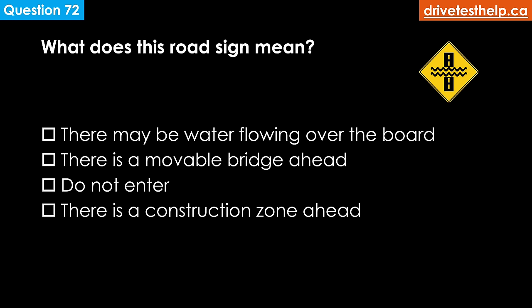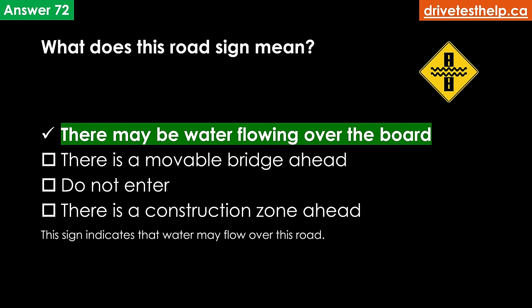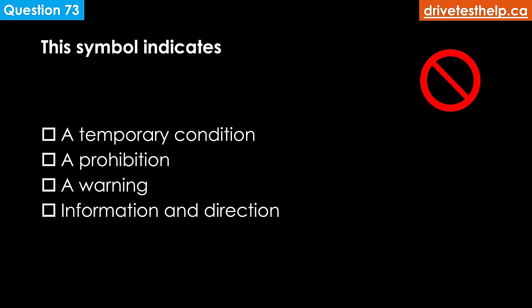What does this road sign mean? Options: there may be water flowing over the road; there is a movable bridge ahead; do not enter; there is a construction zone ahead. The correct answer is there may be water flowing over the road. What does a symbol indicate? Options: a temporary condition; a prohibition; a warning; information and direction. The correct answer is a prohibition. A red circle with a slash through it means the activity shown inside the ring is not allowed.